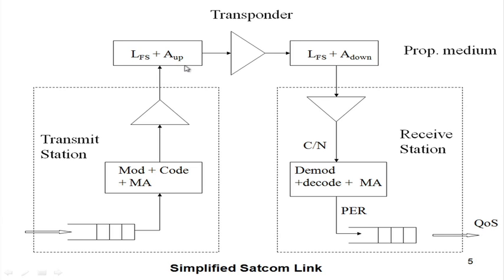The transponder — shown simply as an amplifier — is actually also a frequency translator. While going up, the signal from the transmitter to the transponder experiences free-space path loss and uplink attenuation, which can be dominant during rain. The transponder amplifies and frequency-translates the signal; then on the downlink it experiences downlink free-space loss and downlink attenuation. Since frequencies differ, the downlink attenuation is different from the uplink attenuation.